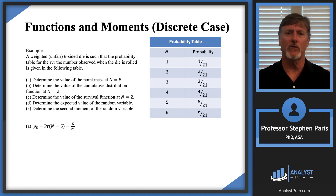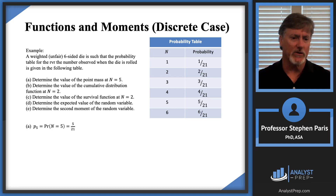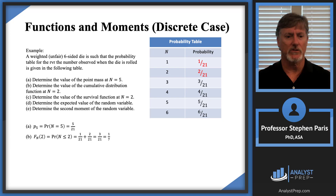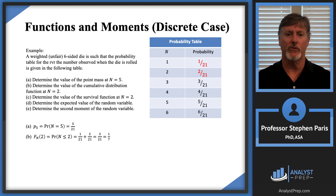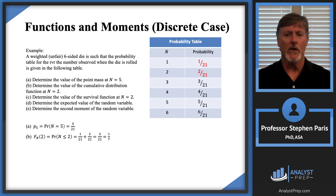Parts B and C have to do with distribution and survival functions. Part B: what's the distribution function evaluated at N equal two? That's the probability that cap N is less than or equal to two — that's the definition of the CDF. I've highlighted those probabilities: one over 21 plus two over 21 equals three over 21, which is one-seventh. So cap F sub N of two equals one-seventh.